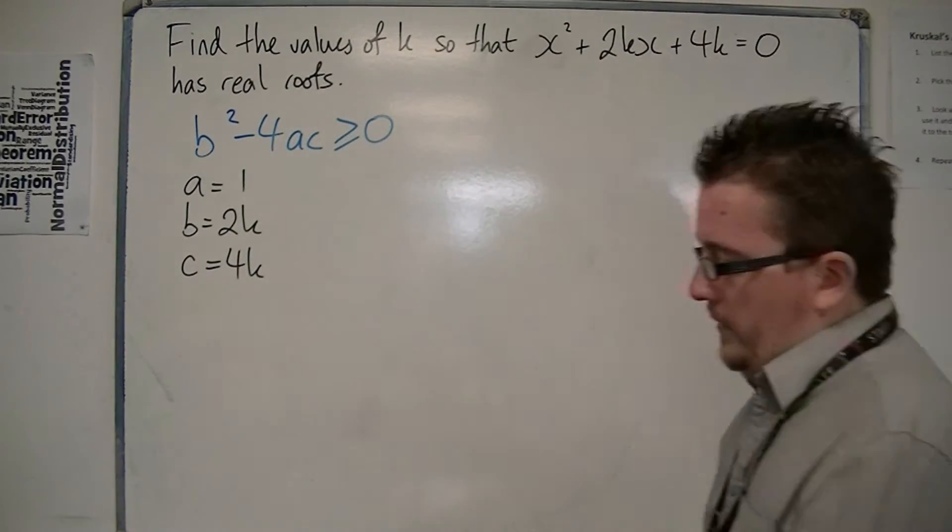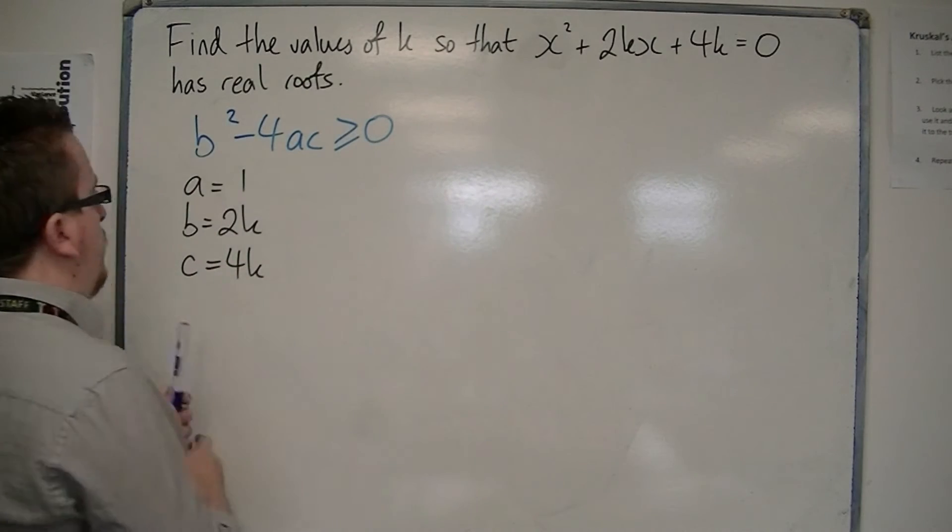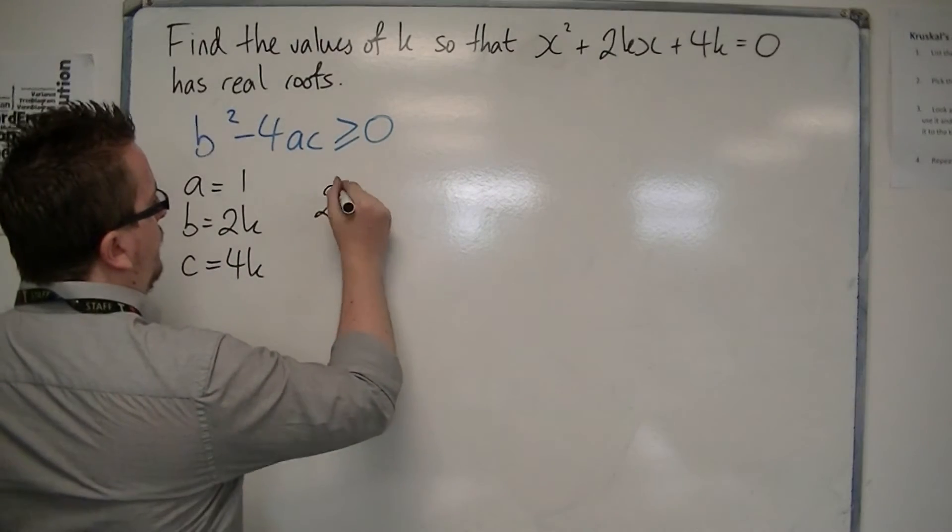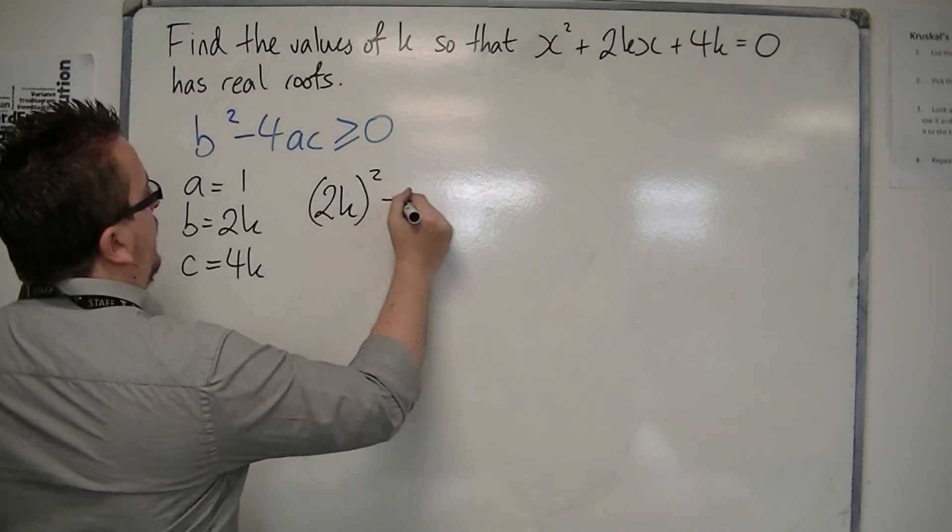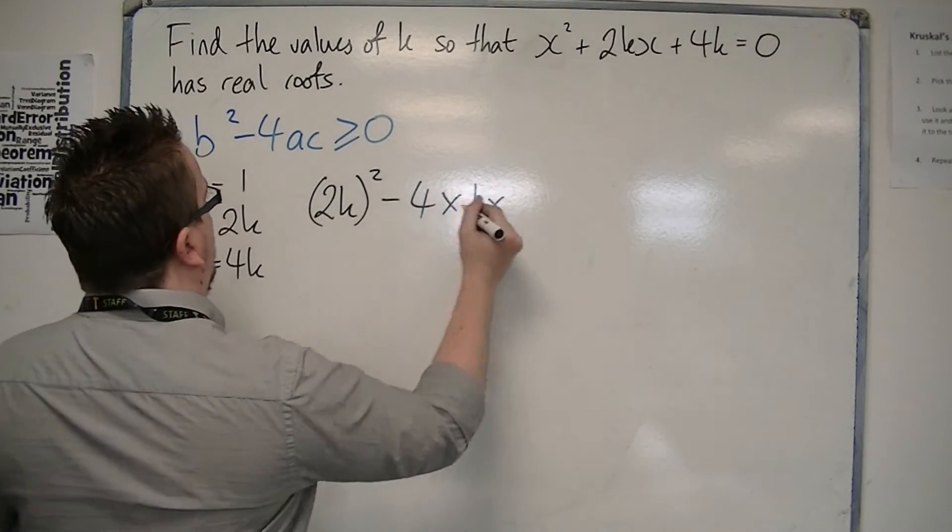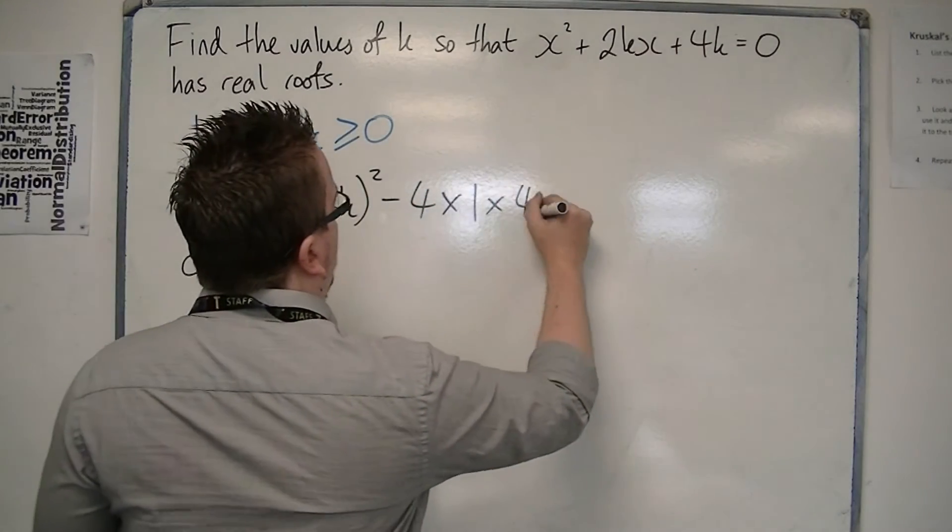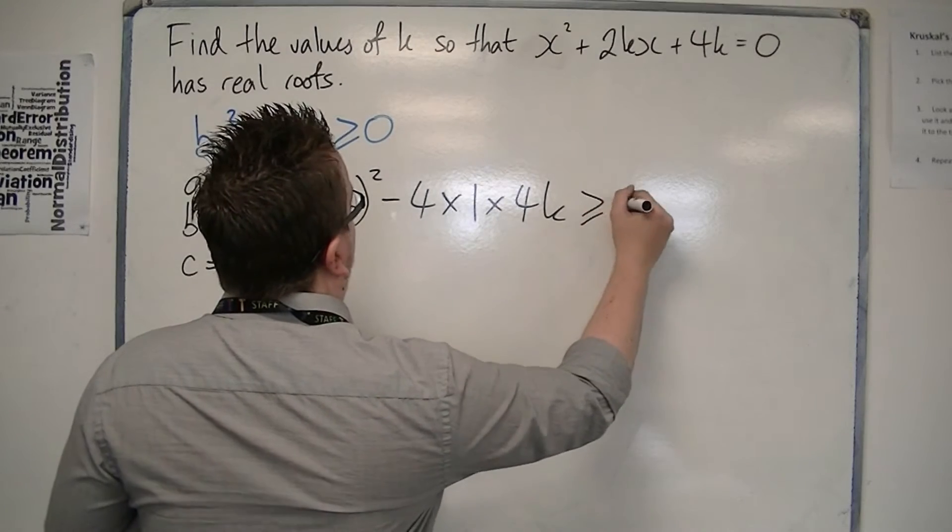So, b squared, so we've got 2k all squared here, take away 4 lots of a times c, which is 4k, and this must be greater than or equal to 0.